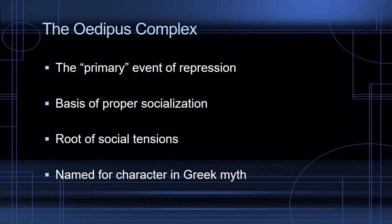The Oedipus complex is one of the most important and controversial theories in Freud's work. It's the primary event of repression and in a certain sense is where the unconscious gets established. It's the basis of our unconscious, the difference between our unconscious and conscious mind, and also the basis for our proper socialization. It's where our unfit desires are first redirected into something socially acceptable, and at the same time it's the root of all our social tensions. It's named for Oedipus from Greek myth, who accidentally kills his father and marries his mother.